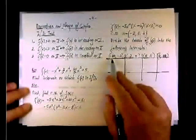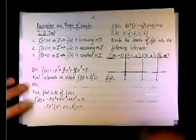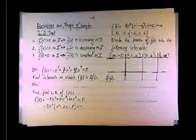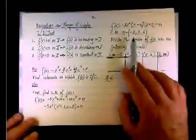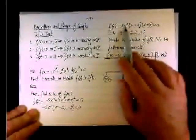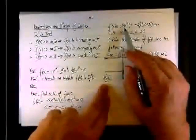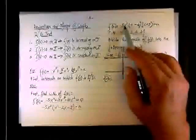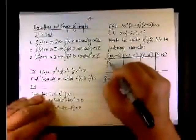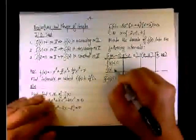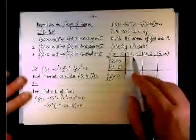For the interval negative infinity to negative 2, I pick the test point x equals negative 3 and check the sign of f prime. I don't care about the value, only whether f prime is positive or negative. Using the factored form: the first factor negative 5 is negative, x squared at negative 3 is positive so negative 5x squared is negative, x minus 4 is negative, x plus 2 is negative. So f prime of negative 3 is negative, meaning f of x is decreasing on this interval.